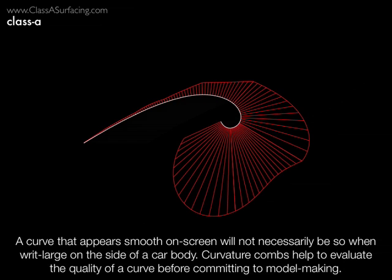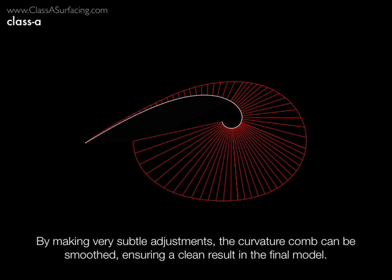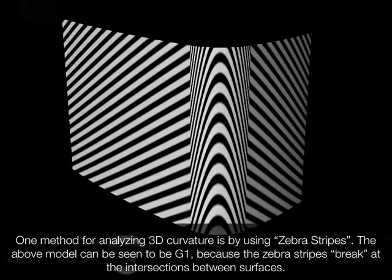Another way of using curvature analysis: when I drew this curve, it looked perfectly smooth on the screen. I took the time to really adjust it nicely, but the curvature analysis shows me that the curve is actually far from smooth. There are lots of dips and lumps in it that may be visible in a final model. By increasing the degree of the curve from degree 3 to degree 5, which I'll discuss in a later tutorial, and making some very slight adjustments, I could create a curve that looked almost identical on screen but was much smoother overall. This curve will definitely look better in the final model, or on screen, or even in print.